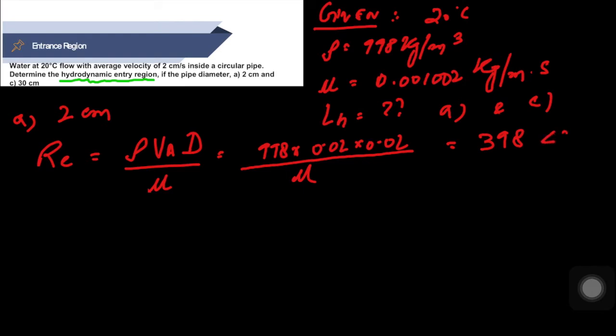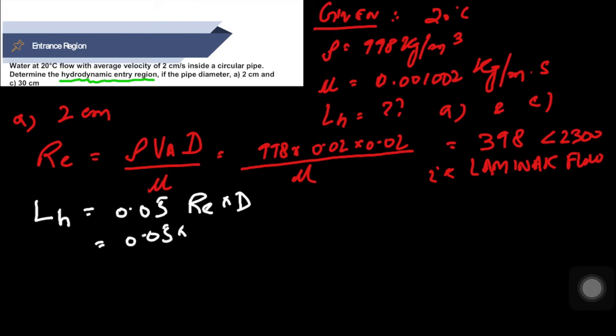Reynolds number 398 is less than 2300, which implies this is laminar flow. When the flow is laminar, the formula for hydrodynamic length LH = 0.05 × Re × D. This is 0.05 × 398 × 0.02, which comes out to be 0.398 meter or 39 centimeter. So the laminar entrance region is 39 centimeter.